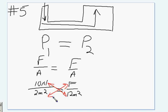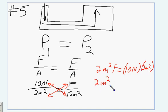And we divide. So we get 2 meters squared F equals 10 newtons times 2 meters squared. So 2 meters squared F equals 120 newton meters squared divided by 2 meters squared.